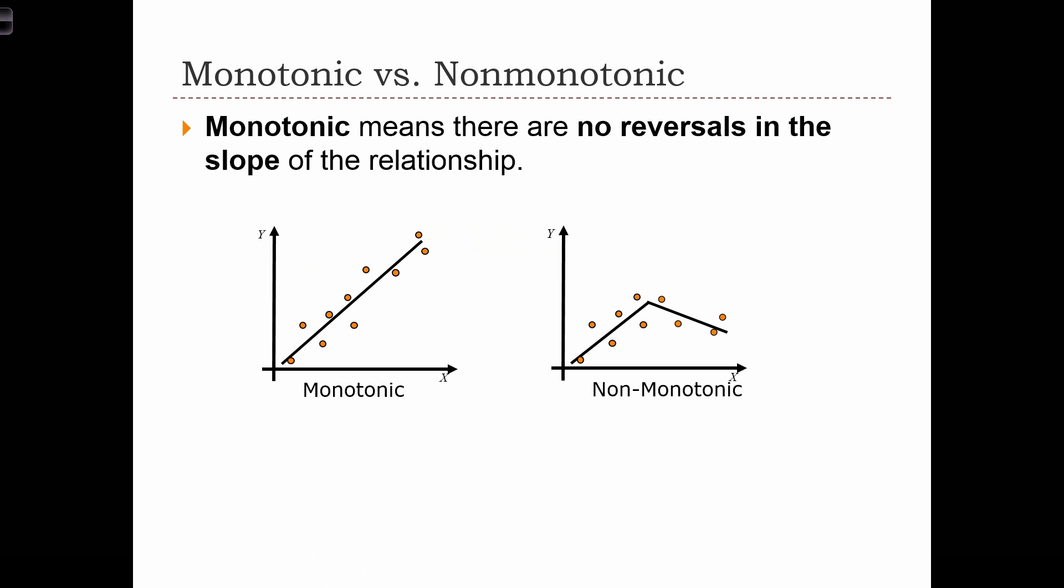First of all, monotonic means there are no reversals in the slope of the relationship. So on the left-hand side, we have a monotonic relationship. Mono meaning single, tonic meaning tone, but a type. So here we have a monotonic relationship because the relationship is positive and always increasing.